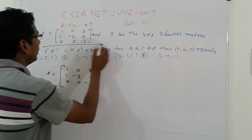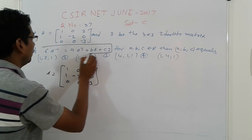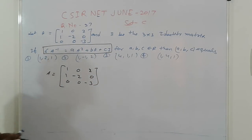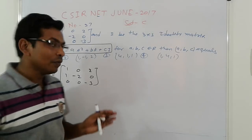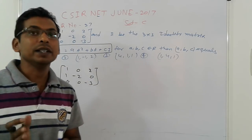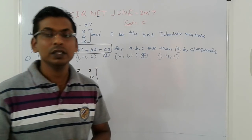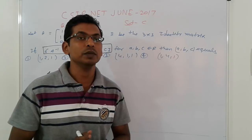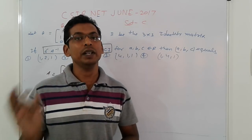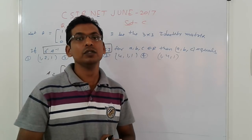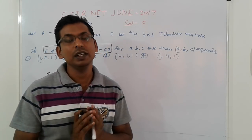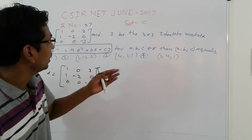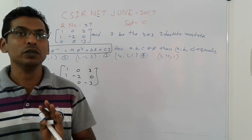Friends, that plays the major role. So here, what you have to find out is the characteristic equation, and then after that, use the Cayley-Hamilton theorem — every square matrix satisfies its own characteristic equation — and find out, then compare, then you can find out the answers.